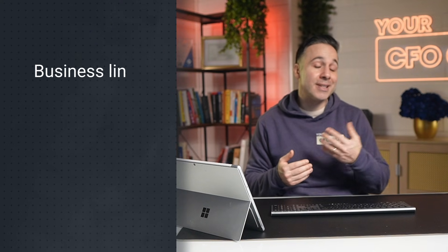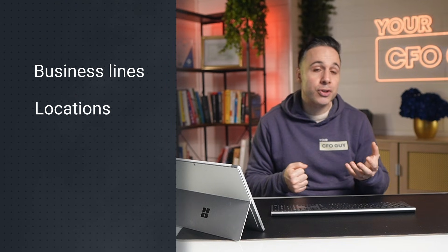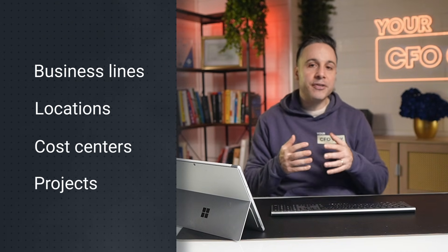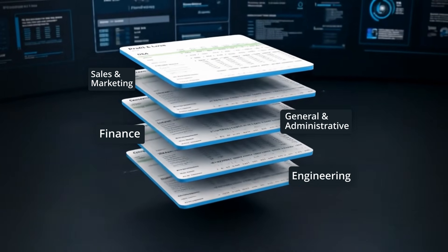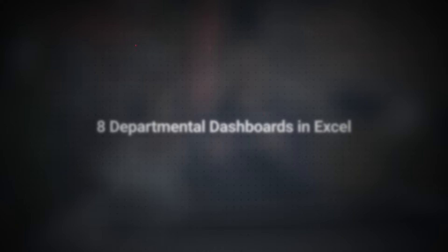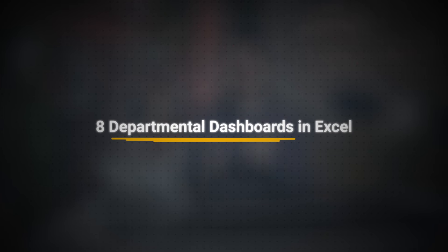Classes aren't just for departments — you can also use them for business lines, locations, cost centers, or projects. Different ERPs give these different names, but the concept is identical. Each tag adds a new dimension to your reporting. Now that we're familiar with how classes work, let's jump into Excel and look at eight different dashboards that showcase your data by class.